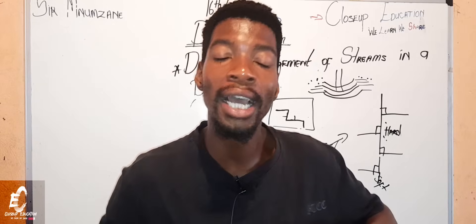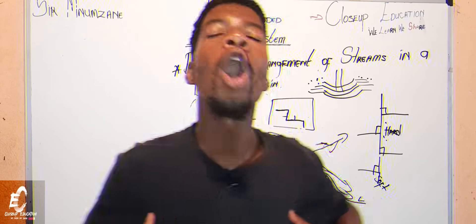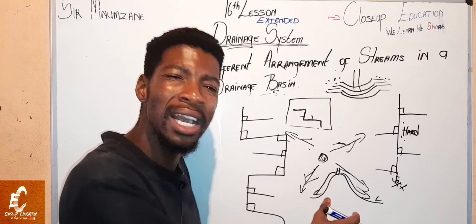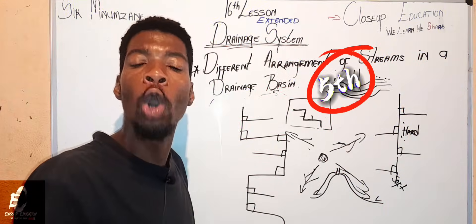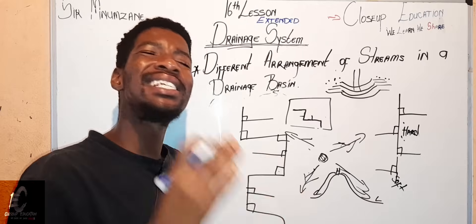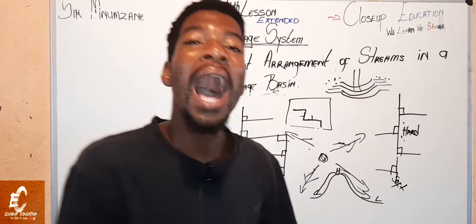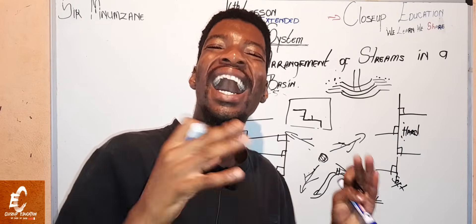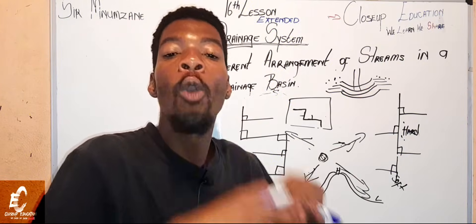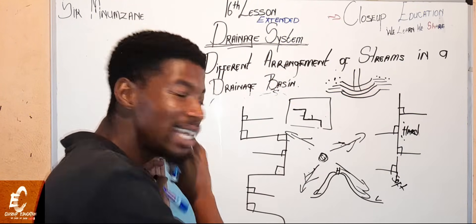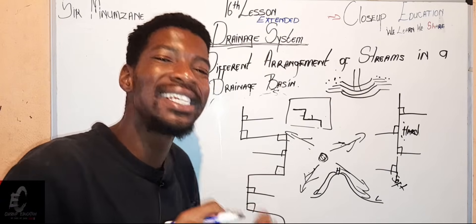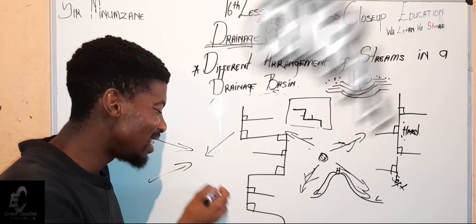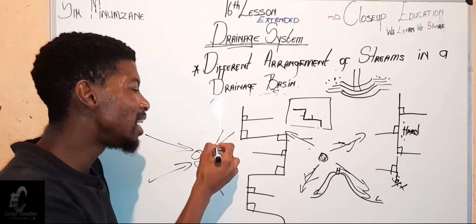That was the radial pattern. Now our fifth drainage pattern is called the centripetal pattern. The centripetal pattern is the opposite of radial — the streams are moving towards the central low-lying altitude, not away from it. Here the streams flow towards the central low point.